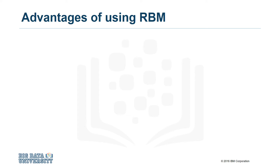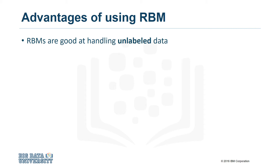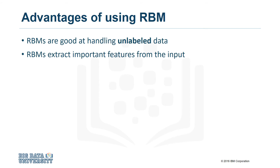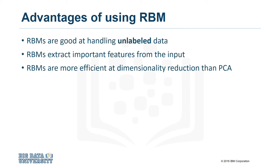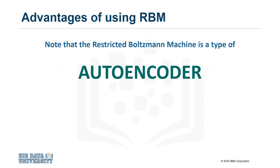Let's touch on a few reasons why RBMs are such a great tool. A big advantage is that RBMs excel when working with unlabeled data. Most important real-world data sets are unlabeled, like videos, photos, and audio files, so RBMs provide a lot of benefit in these types of unsupervised learning problems. Another advantage is that during the learning process, the RBM extracts features from the input and decides which features are relevant and how to best combine them to form patterns. Also, RBMs are generally more efficient at dimensionality reduction than principal component analysis, which is a popular alternative. As RBMs learn from the data, they actually encode their own structure. This is why they're grouped into a larger family of models known as the autoencoders.